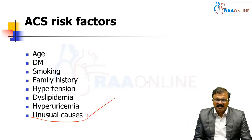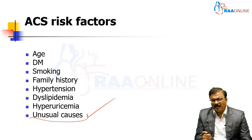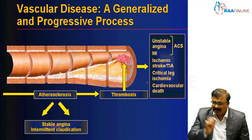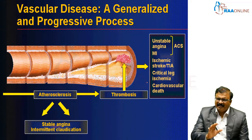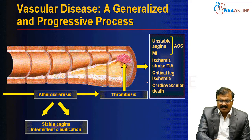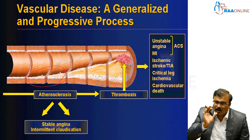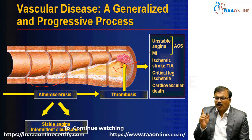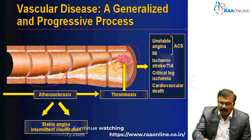Inflammation also contributes apart from modifiable and non-modifiable risk factors. The pathophysiology is clearly evident in this picture: in stable angina and intermittent claudication there is atherosclerosis with no fixed occlusion. It is only atherosclerosis progressing to a thrombus — coronary thrombosis — following plaque rupture.